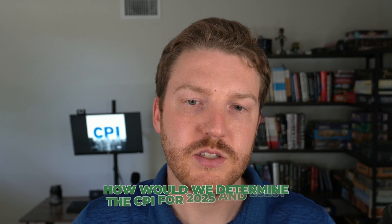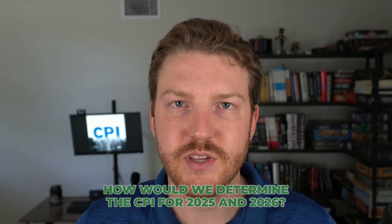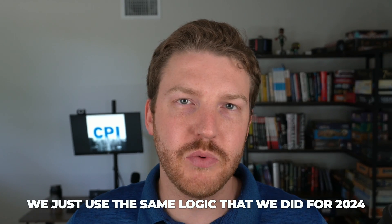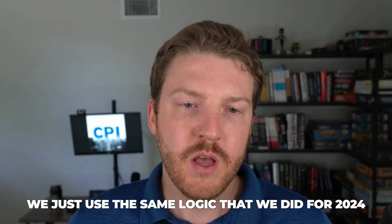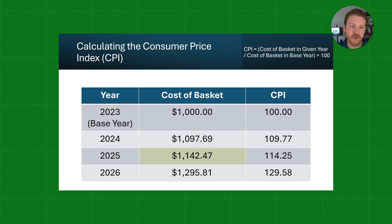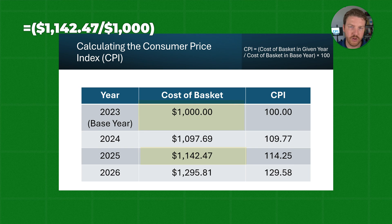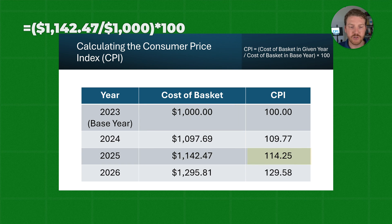How would we determine the CPI for 2025 and 2026? We just use the same logic we did for 2024. We take the cost of the basket in the given year — so for 2025 that would be $1,142.47 — and divide it by the cost of the basket in the base year, which is still $1,000 from 2023, then multiply by 100, which gives us a CPI of 114.25. Same logic applies for 2026. CPI, as you can see, is actually pretty straightforward to calculate.